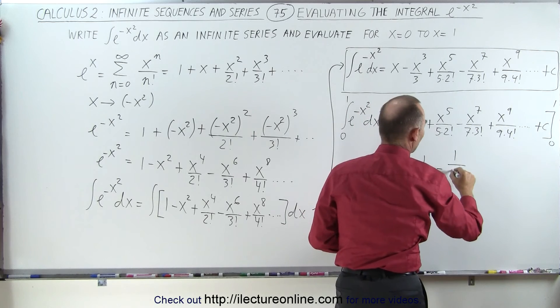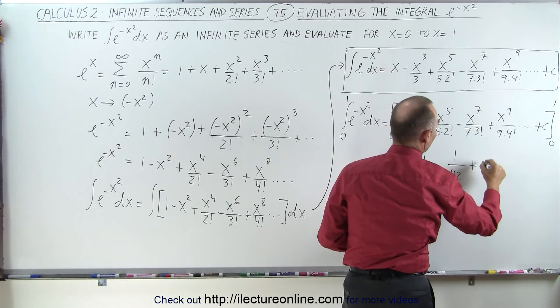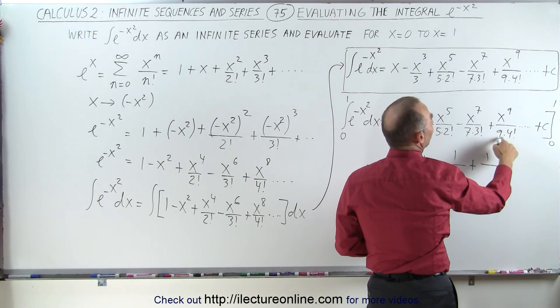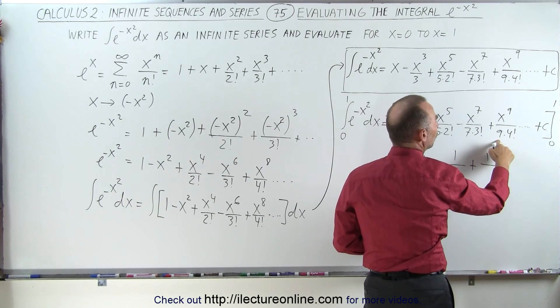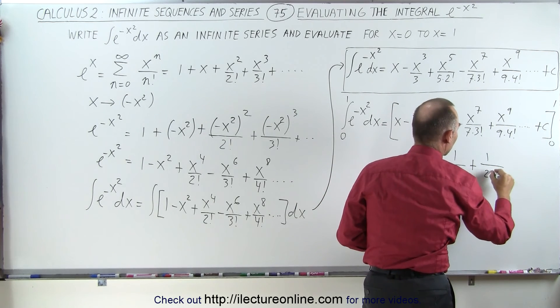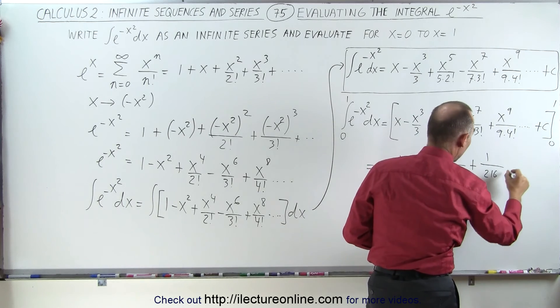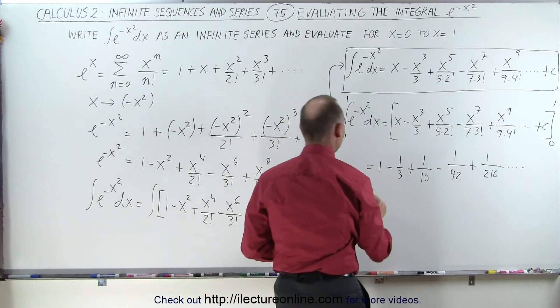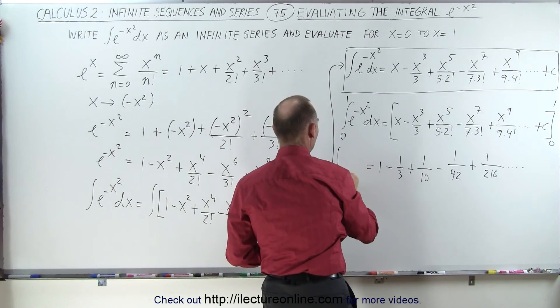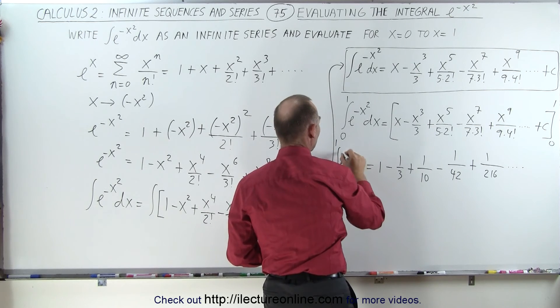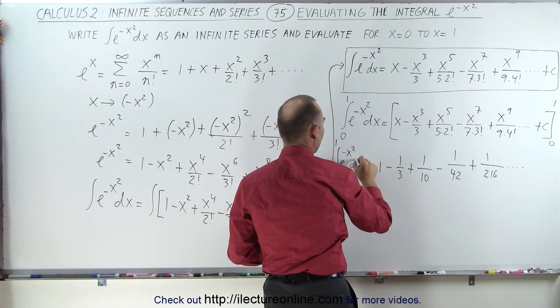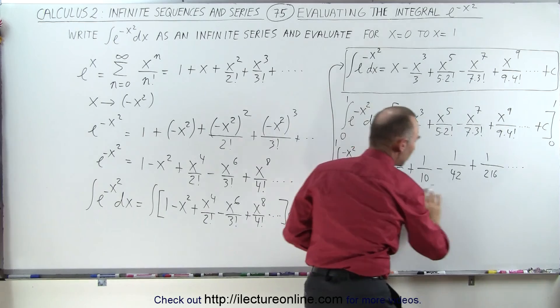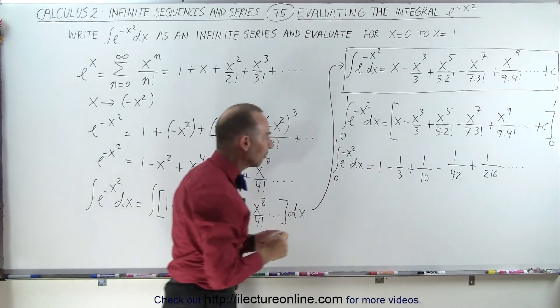that's 6 times 7, which is 42, plus 1 over, that's 24 times 9, which is 240 minus 24, or 216, and on and on and on like that. So, the integral from 0 to 1 of e to the minus x squared dx evaluated will simply be the infinite sum as follows.